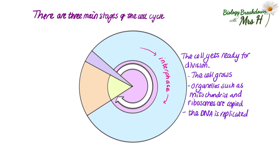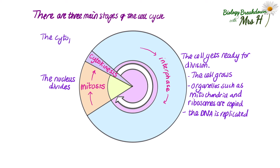In the second stage, mitosis, this is when the nucleus divides. Then the third stage is cytokinesis, which is when the cytoplasm and the cell surface membrane divide.